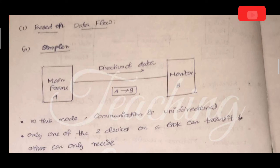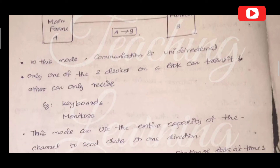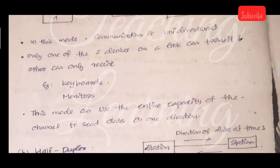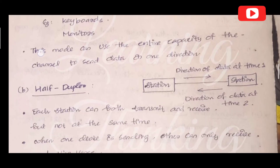In simplex communication, data communication is unidirectional — only one of the two devices on a link can transmit; the other can only receive. Examples include keyboards and monitors. This mode uses the entire capacity of the channel to send data in one direction only.